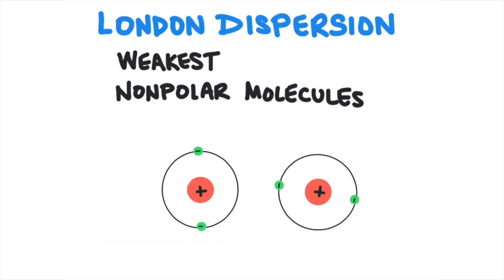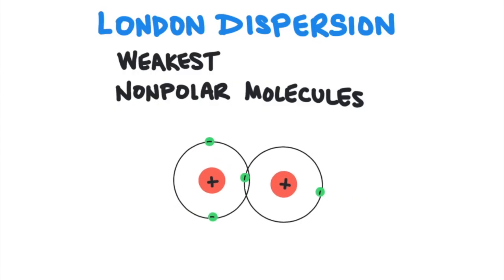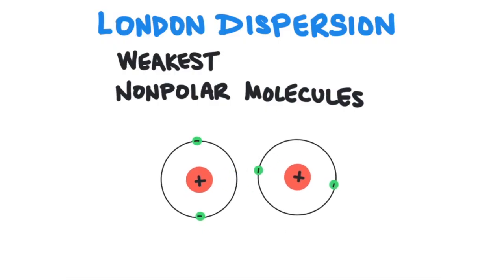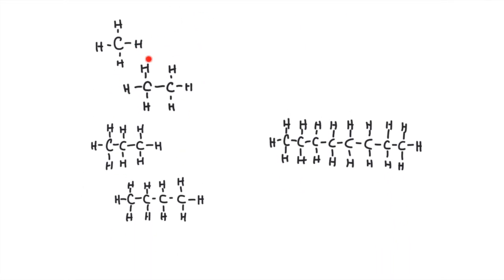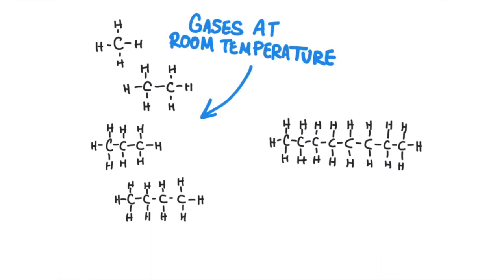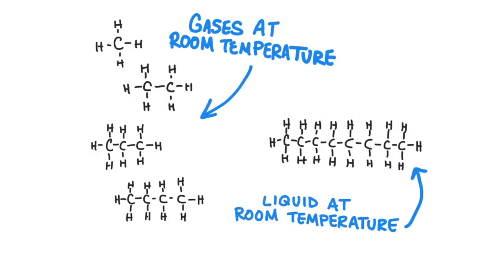London dispersion forces are the weakest of all the intermolecular forces. Although they exist between all molecules, they are only really evident between nonpolar molecules. Dispersion forces occur when the positively charged nucleus of atoms in one molecule attracts the negatively charged electrons in the atoms of another molecule — it's an extremely weak attraction. However, the larger the atom or molecule, the larger the attraction will be. Methane, ethane, propane, and butane are all gases because their molecules do not stick together very strongly — they're really small molecules. Octane, on the other hand, is a liquid because it's a bigger molecule, so the dispersion forces are stronger.